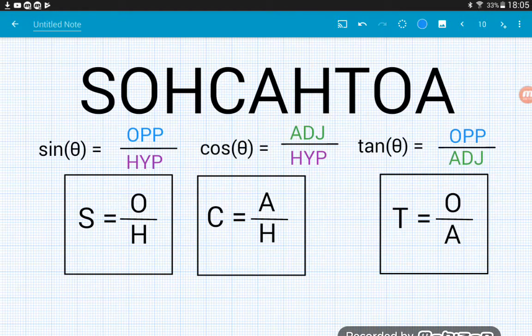And they all run the same way as well. So SOH, sine equals the opposite over the hypotenuse, CAH, cos is equal to the adjacent divided by the hypotenuse, and TOA, tan is equal to the opposite over the adjacent. So SOHCAHTOA helps us remember these three identities in quite a nice easy to remember format.